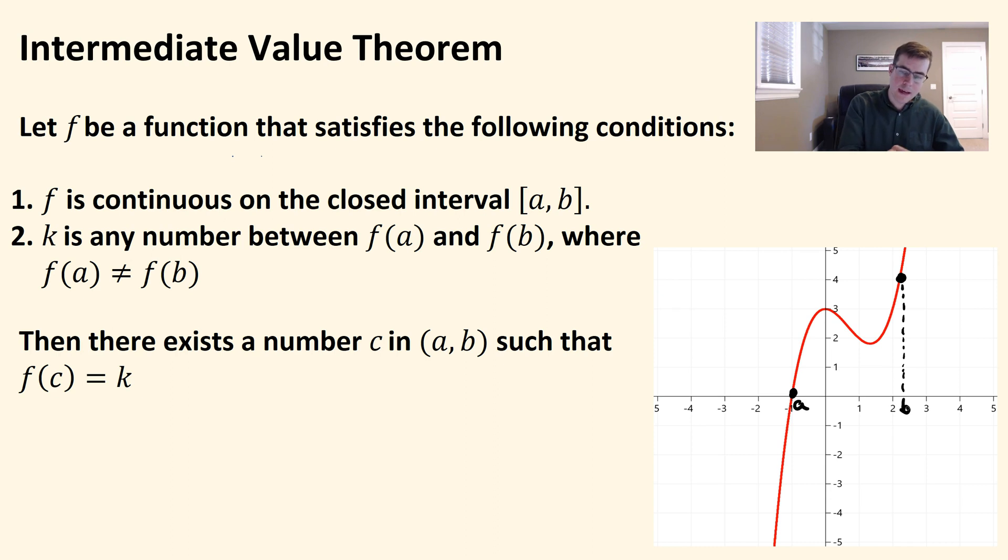Now the important thing is that f of a does not equal f of b. Well, f of a here would just be zero, and this is f of b. So we have f of b up here, and f of a is right there. It's at zero.